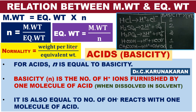In the normality equation, normality equals weight per liter divided by equivalent weight. We need equivalent weight or equivalent mass. How is equivalent weight calculated from molecular weight? The relation is: molecular weight equals equivalent weight into N. For acids, N is basicity, so equivalent weight of acid equals molecular weight divided by basicity.